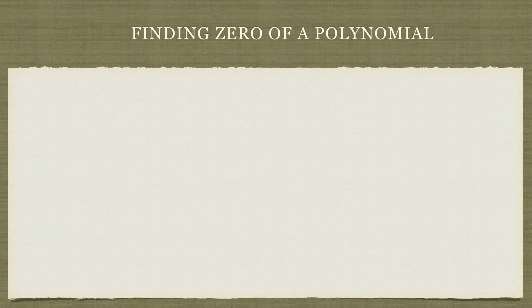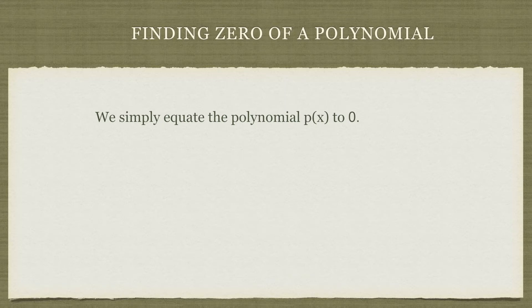We find the zero of a polynomial by equating the polynomial p(x) to zero and solving for x. That means if any polynomial p(x) is given, we simply write p(x) equals zero and solve. Whatever value we get for x will be the zero of our polynomial.